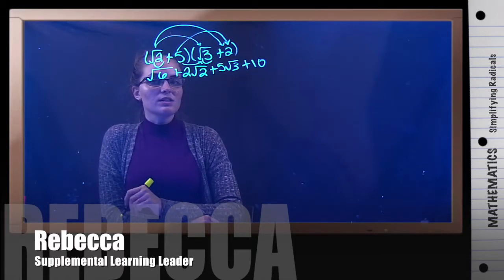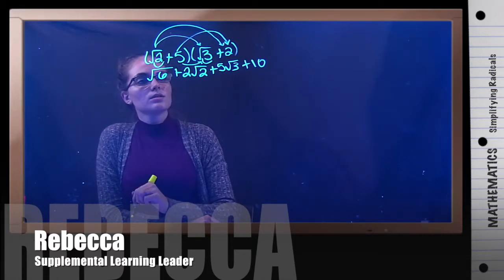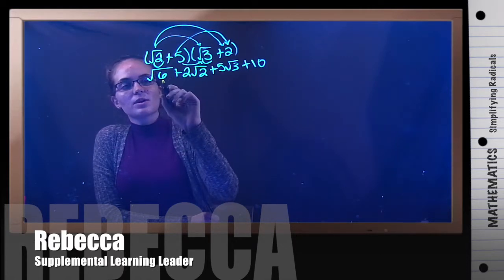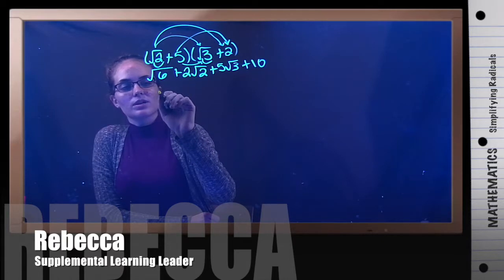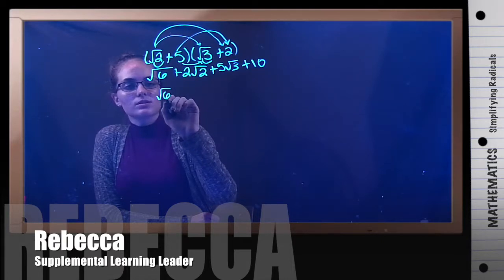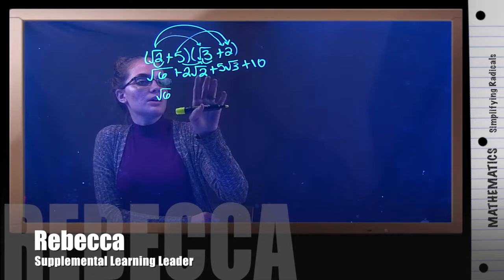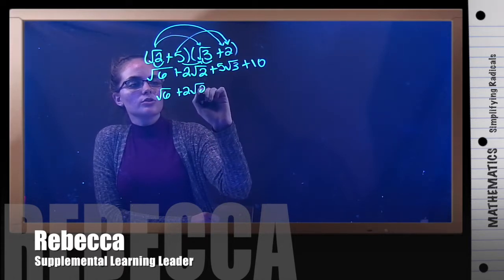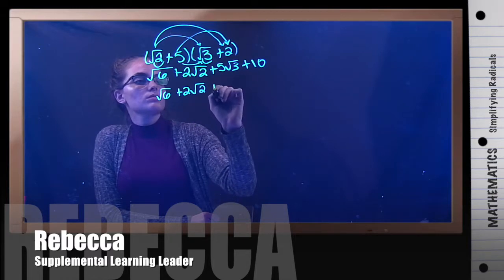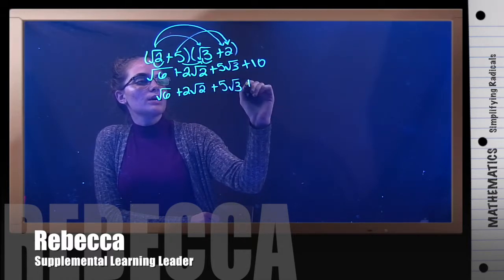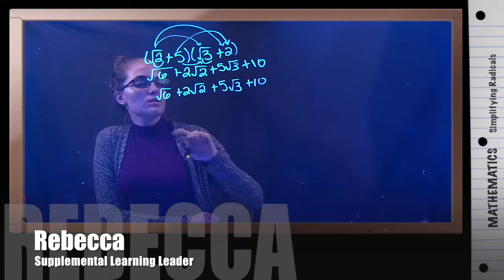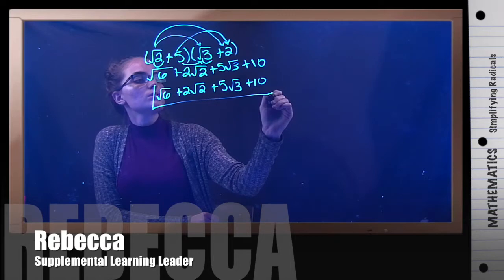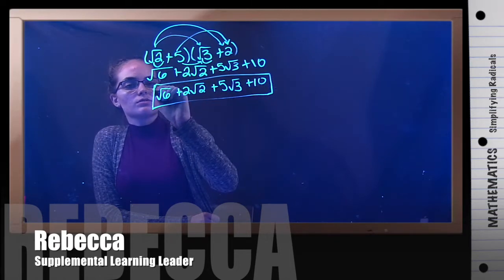Now we want to simplify anything if we can. So I'm just going to look at each one of these. The square root of 6 can't be simplified because the only prime numbers in 6 are 3 and 2. So that's just going to stay the square root of 6. Same thing here. The square root of 2 cannot be simplified. And there's no like terms either. Same thing with this one. And obviously plus 10 can't be simplified. So it doesn't look like any of these can be added together like terms or simplified on their own. So that means that this is our final answer.